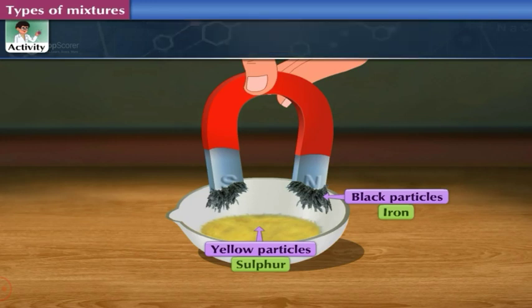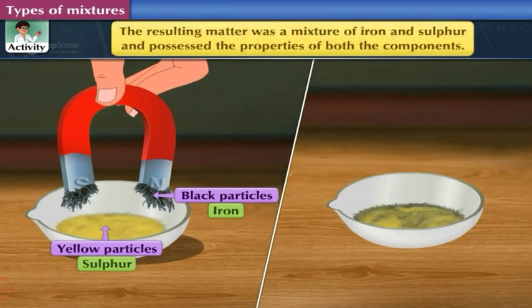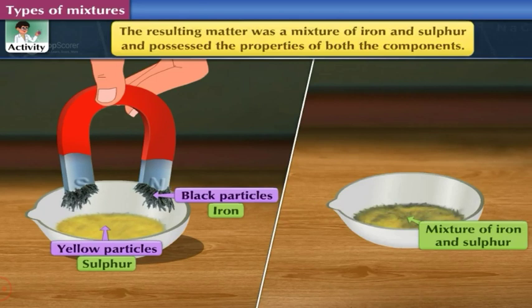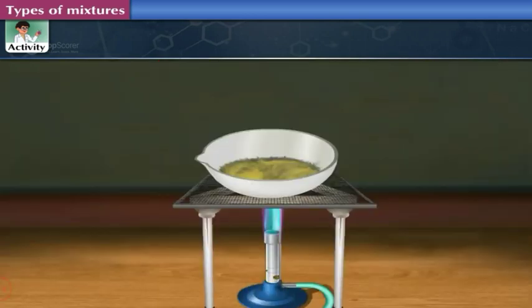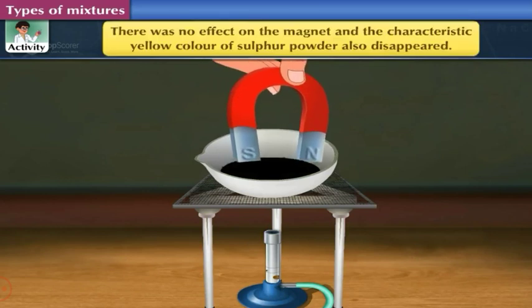This shows that the resulting matter was a mixture of iron and sulfur and possessed the properties of both the components. When iron filings and sulfur were heated together and cooled, there was no effect on the magnet.